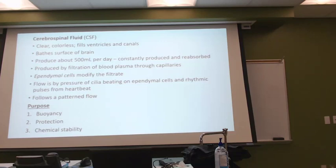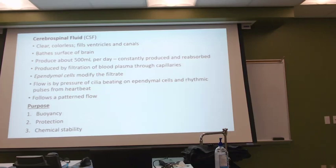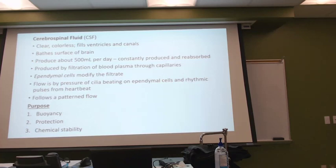In CSF, we produce about 500 milliliters per day — half a liter, which is a pretty good amount. The cells in these ventricles, as the blood comes through, get to modify the filtrate. Those ependymal cells, being glial cells, have the goal of protecting the actual nerve tissue. The flow is affected by our heartbeat — it is a patterned flow, and there is a specific pattern that occurs in the tissues.